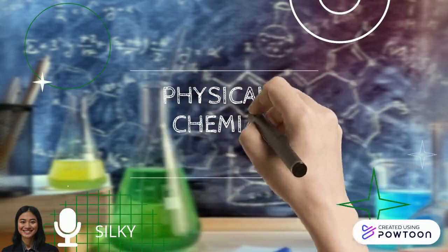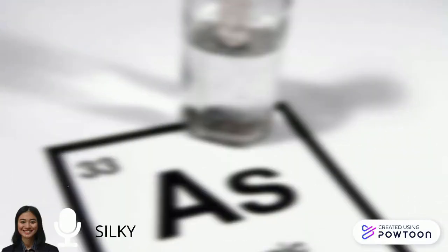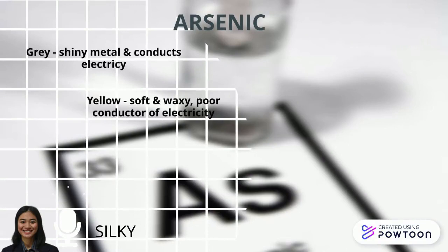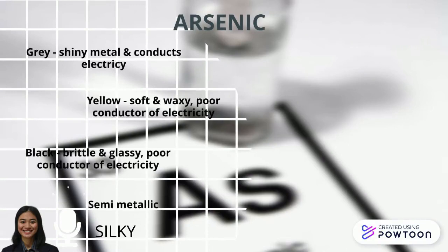As for the physical properties of arsenic, it exists in three types of allotropic forms, and the black one is the most stable one. It is also a semi-metallic element.